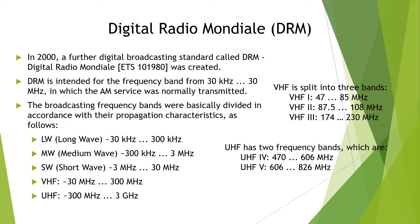In the frequency band below 30 megahertz, very long-range reception is sometimes possible, which is greatly dependent on diurnal variations — that is, day and night cycles — and on solar activity. The channel bandwidths specified are 9 kilohertz for Region 1 and Region 3, and 10 kilohertz for Region 2.